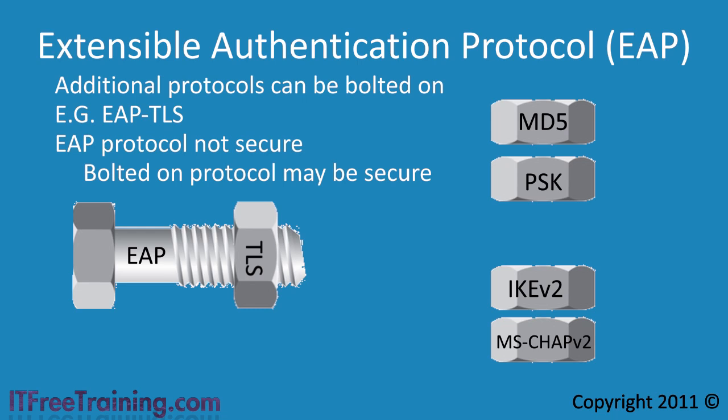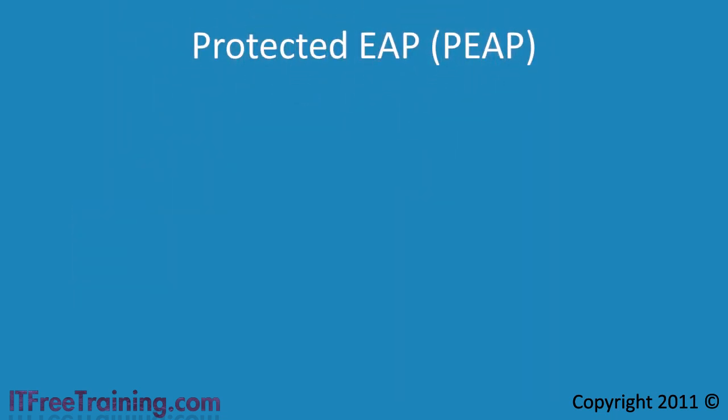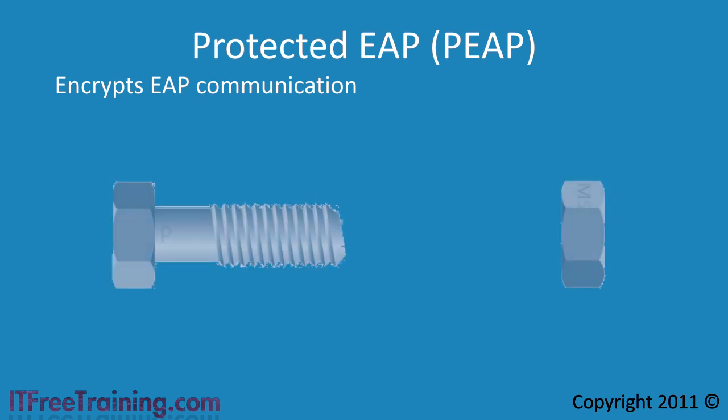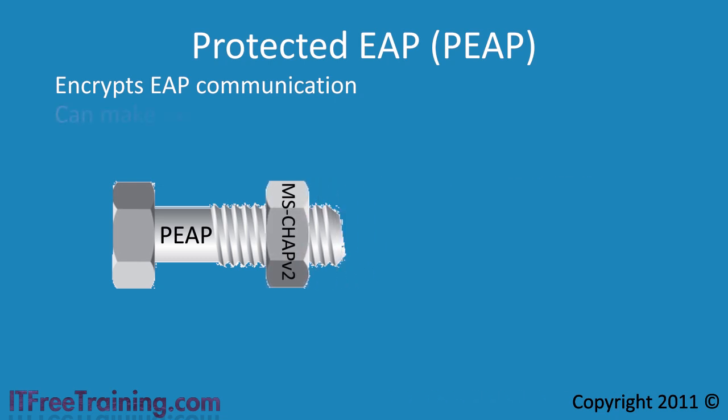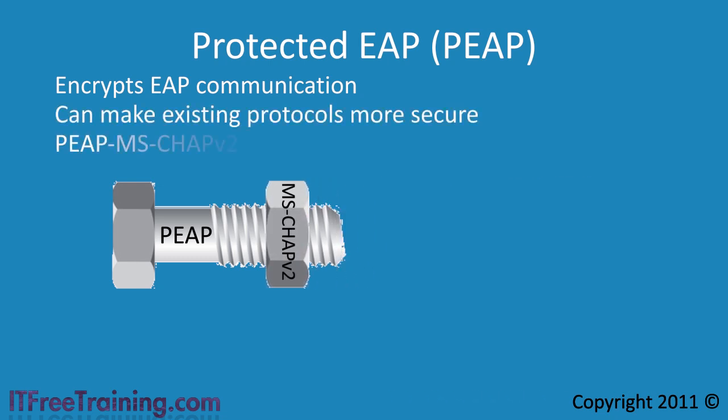What you really want to do is protect EAP from hackers listening in. To do this, Protected EAP or PEAP was developed. As the name suggests, the EAP traffic is encrypted, so a hacker will not be able to make sense of any data transmitted regardless of which protocol is used with PEAP. You can see how bolting on a protocol like MS-CHAP version 2 onto PEAP can make the protocol a lot more secure.